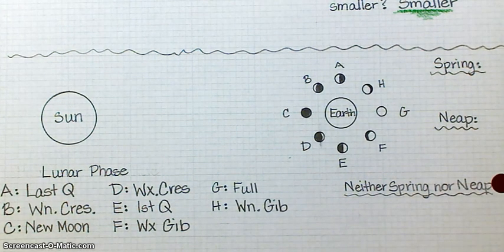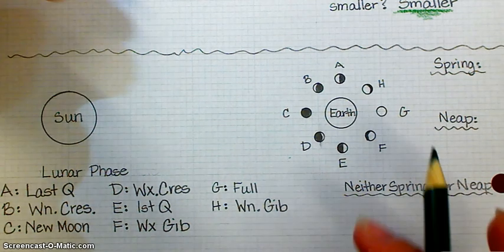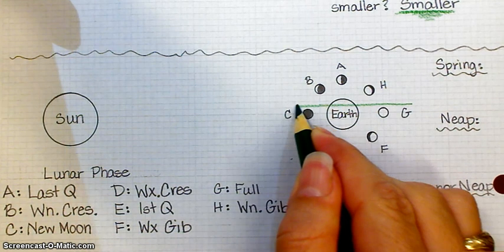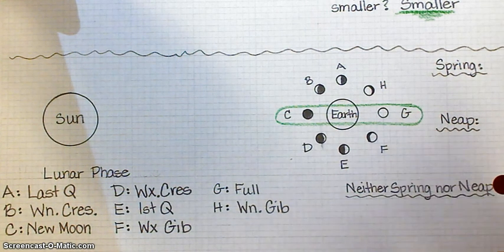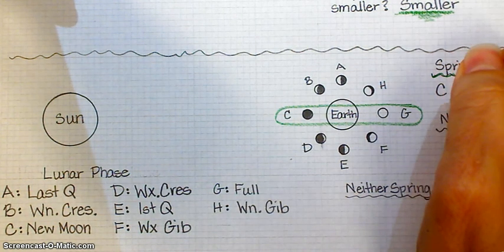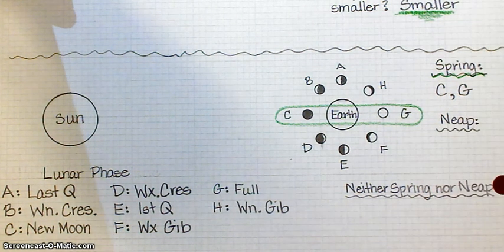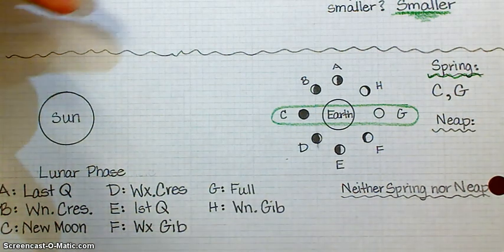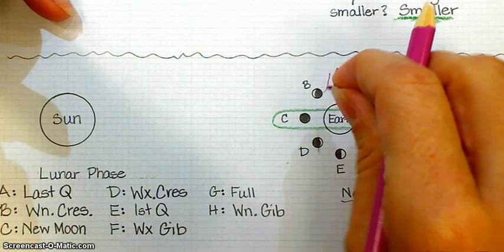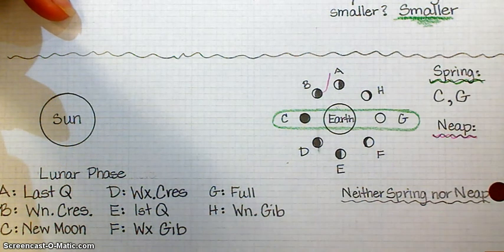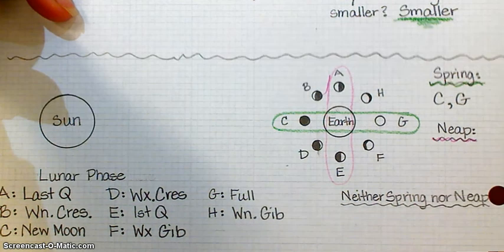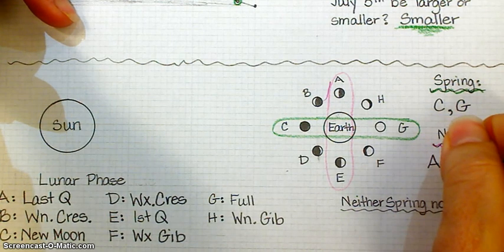All right guys, which ones are spring tides? New and full, that's going to be positions C and G. All right, which ones are neap tides? A and E.